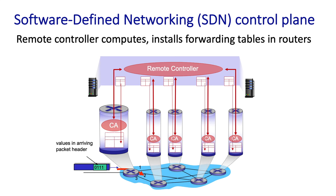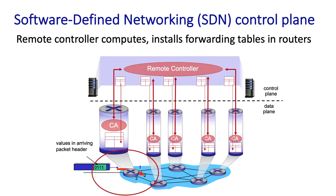The remote controller is typically implemented in a remote data center or set of servers that have high reliability and redundancy. The router still performs its local data plane service — forwarding — as before, but it has received its local forwarding table from the SDN controller rather than having computed it itself.